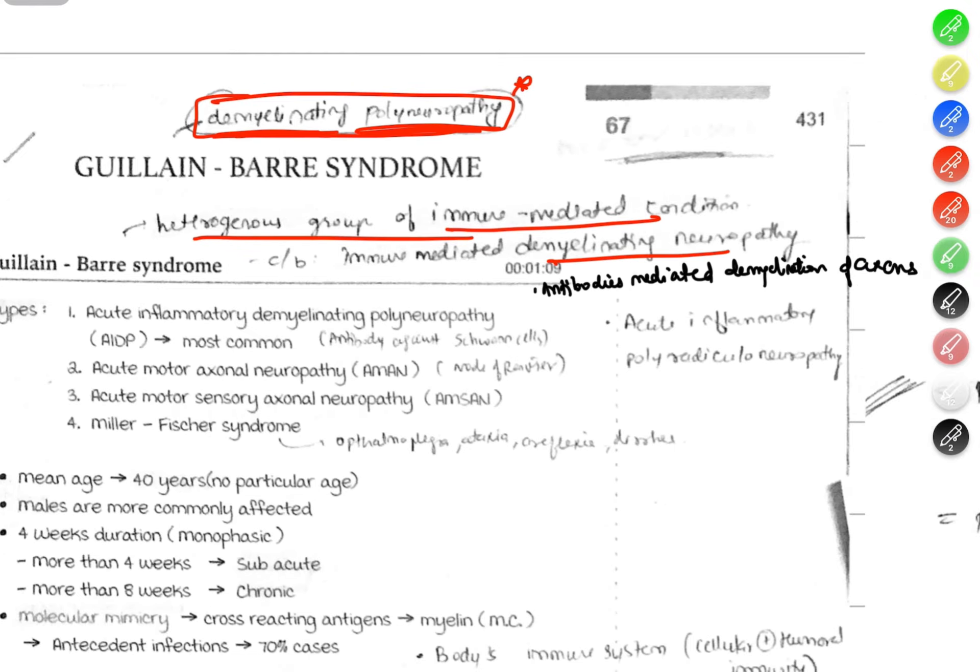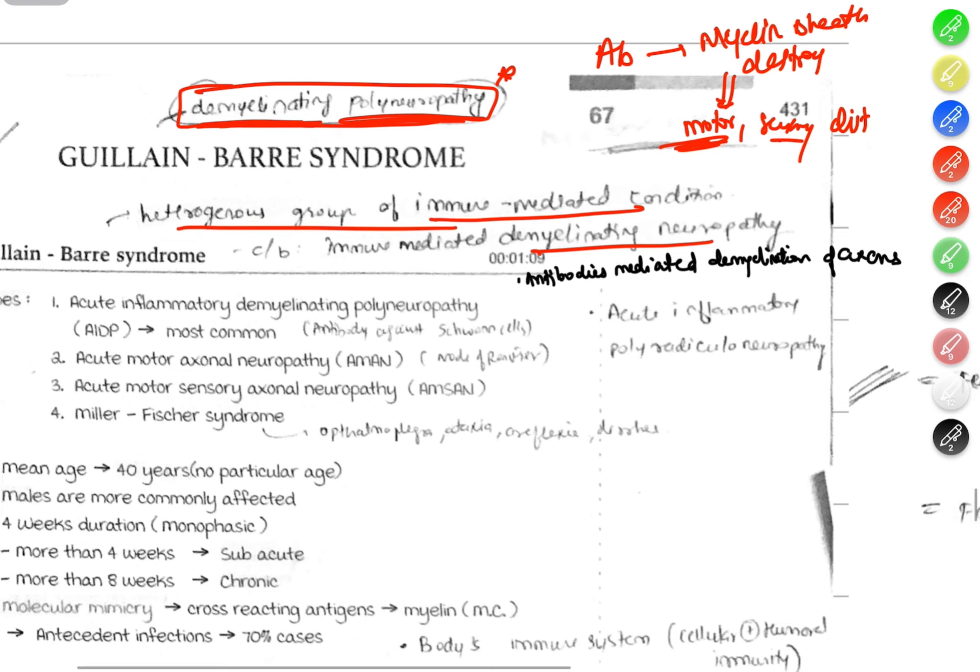This means certain antibodies are formed and these antibodies attack the myelin sheath. The myelin around the nerves is destroyed, which causes motor and sensory disturbances. Initially motor disturbances, later sensory and autonomic disturbances. It is an antibody-mediated demyelination of axons.